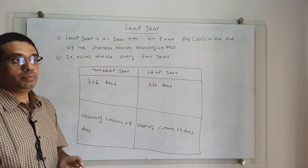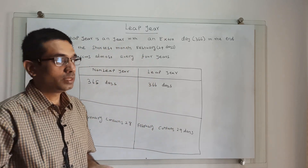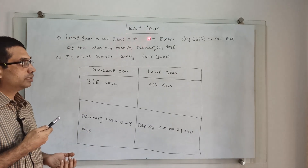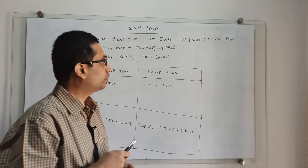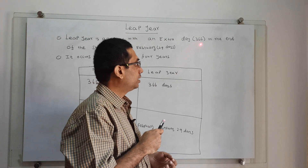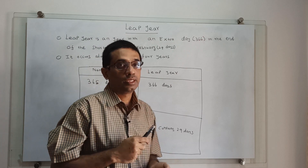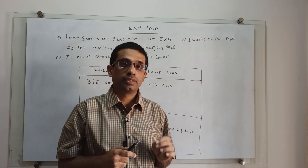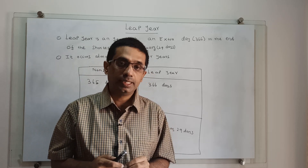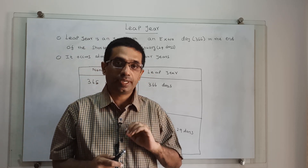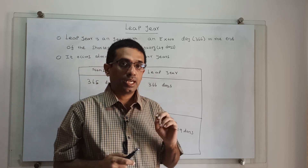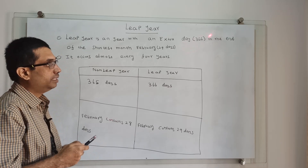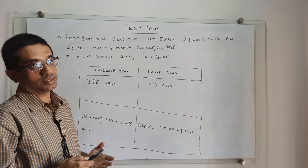So what is a leap year? A leap year is a year with an extra day — that means 366 days. A normal year, or non-leap year, contains 365 days, whereas a leap year contains 366 days.